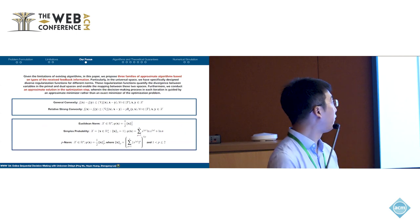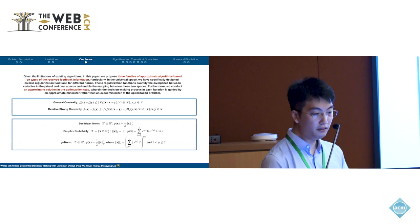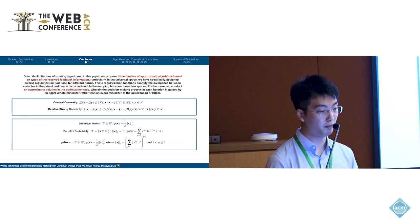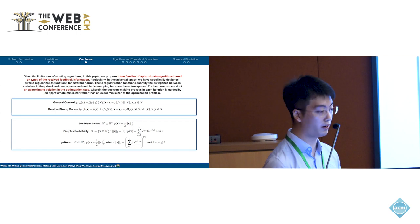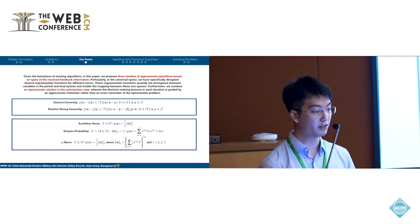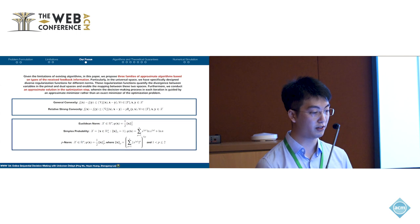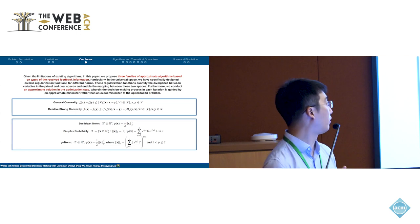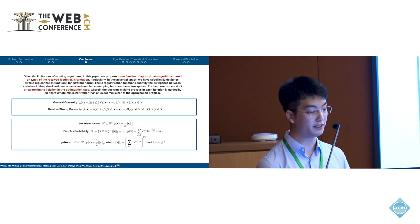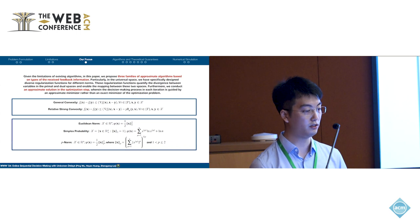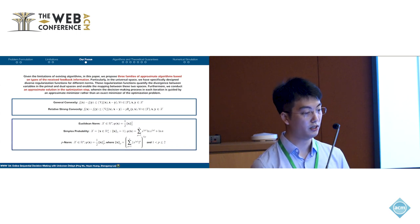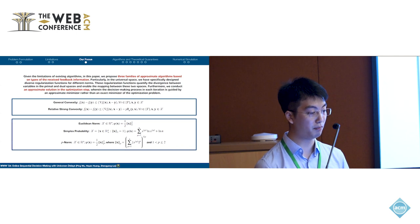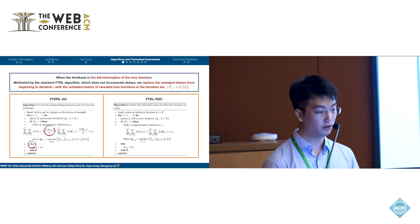Our paper focuses on three types of feedback information: full information, gradient information, and value information. Our paper also considers two types of functions: general convexity and relative strong convexity — note that relative strong convexity is a generalization of standard strong convexity. Additionally, our paper covers three types of spaces: Euclidean norms, simplex probability, and p-norms.